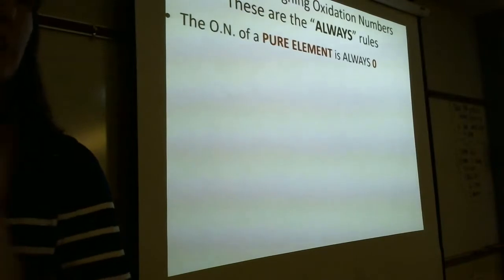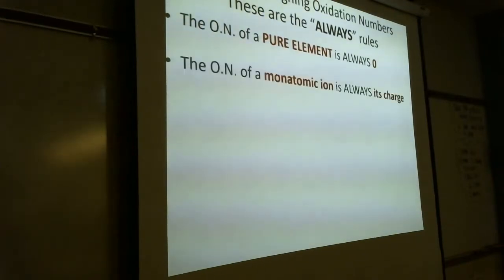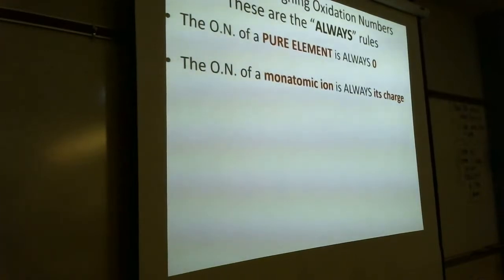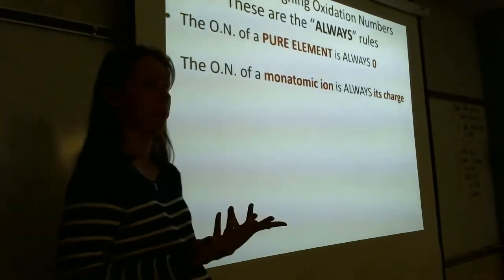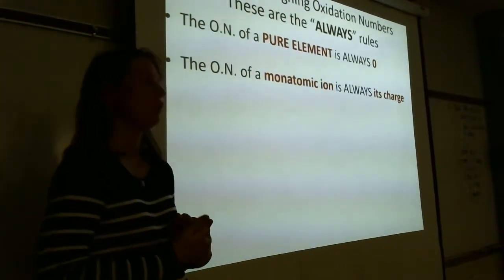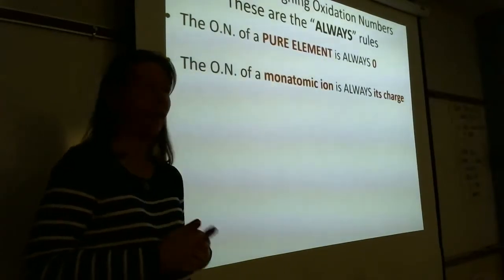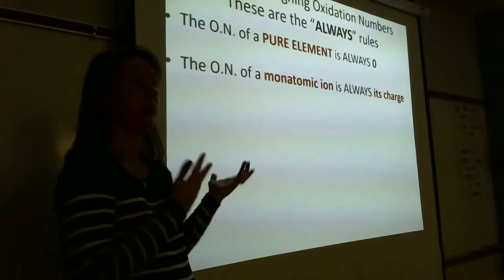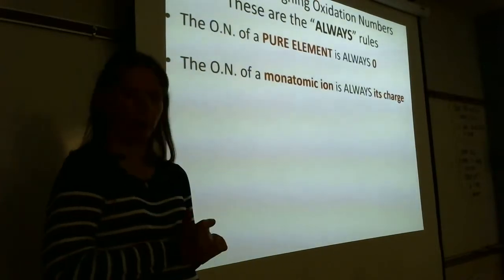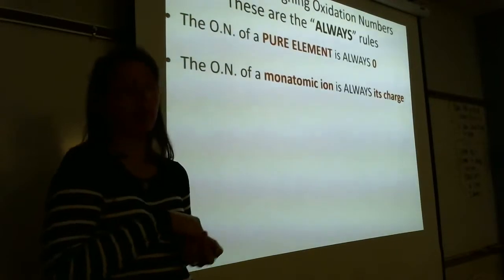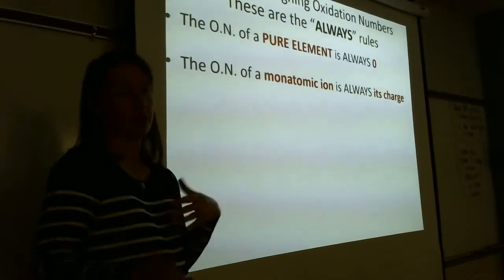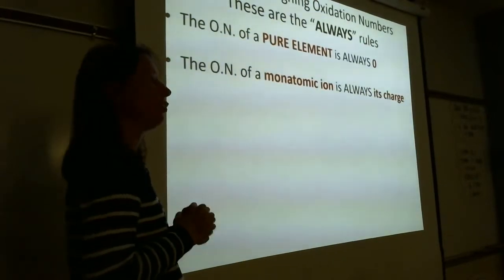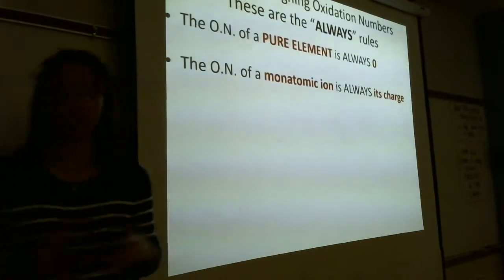A monatomic ion's oxidation number is its charge — that's an easy rule. Sodium ion Na+ has oxidation number +1. Chloride ion Cl- has oxidation number -1. Whatever the charge is — +1, -3, +3 — that's the oxidation number.